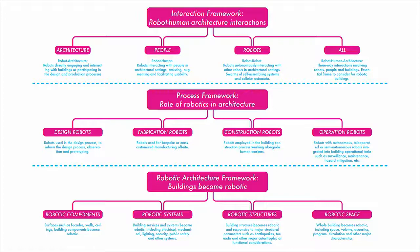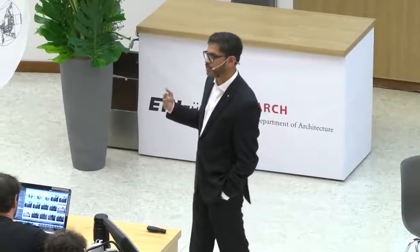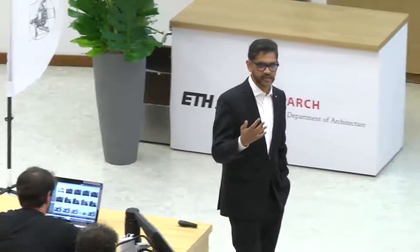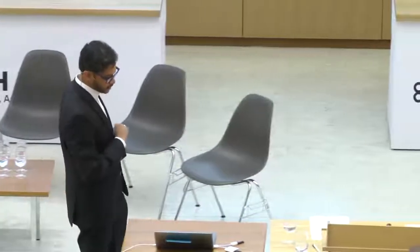The third framework is about what is robotic architecture — how do we understand that? You can have components of the building, systems that are robotic, structures that are robotic, and the space itself can become robotic. These are all open to exploration and research. We do see, in framing it this way, that there are a lot of gaps in the field and opportunities for us to explore, and trajectories that we can set in a variety of organizations.